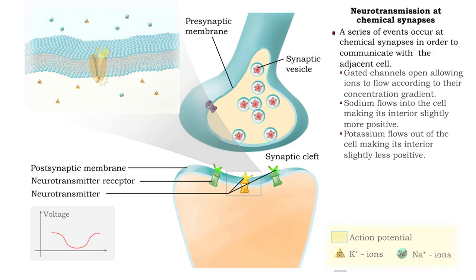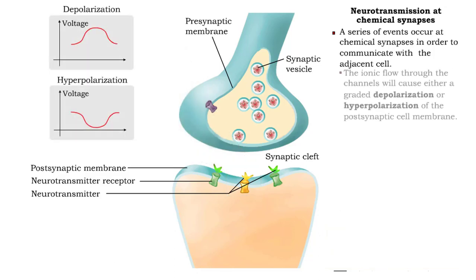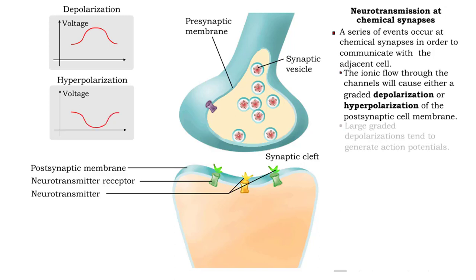Depending on which ions enter the postsynaptic cell through the channels, the ionic flow will cause either a graded depolarization or a hyperpolarization of the postsynaptic membrane. Large graded depolarizations tend to generate action potentials.